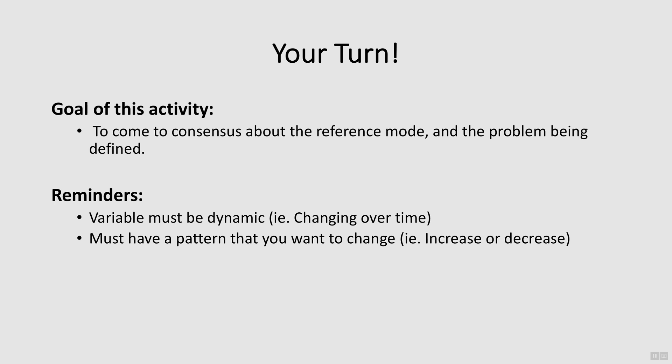Can you identify a key variable of interest? Try creating a reference mode of the variable and see if it passes the test. Is there an undesirable pattern that you want to change? Or do you want to change the status quo pattern? If your variable doesn't pass the reference mode test, then try a different variable. Once you've done this, try going on to the next video which will show you how to elicit variables for the causal loop diagram.